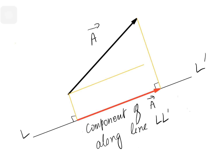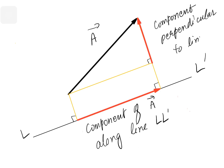Similarly, if we draw one more line here — again this angle is 90 degrees — then this vector is the component of vector A perpendicular to the line L, L dash. We could also call this vector here as the component of vector A along the line. So if this component is A1 vector, then this is also A1 vector. And the component perpendicular to the line will be called A2 vector.